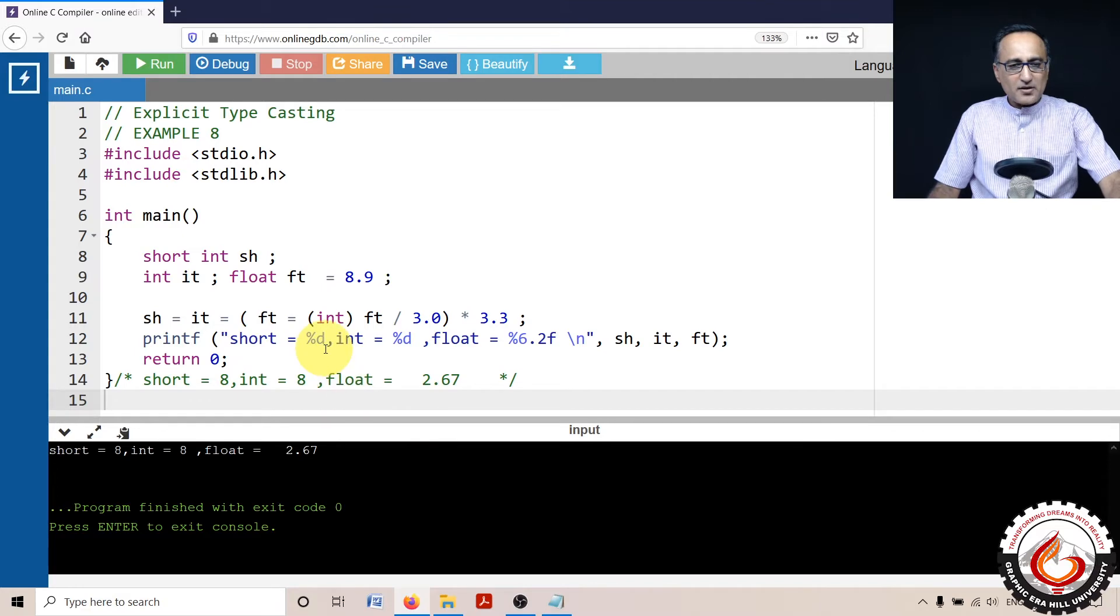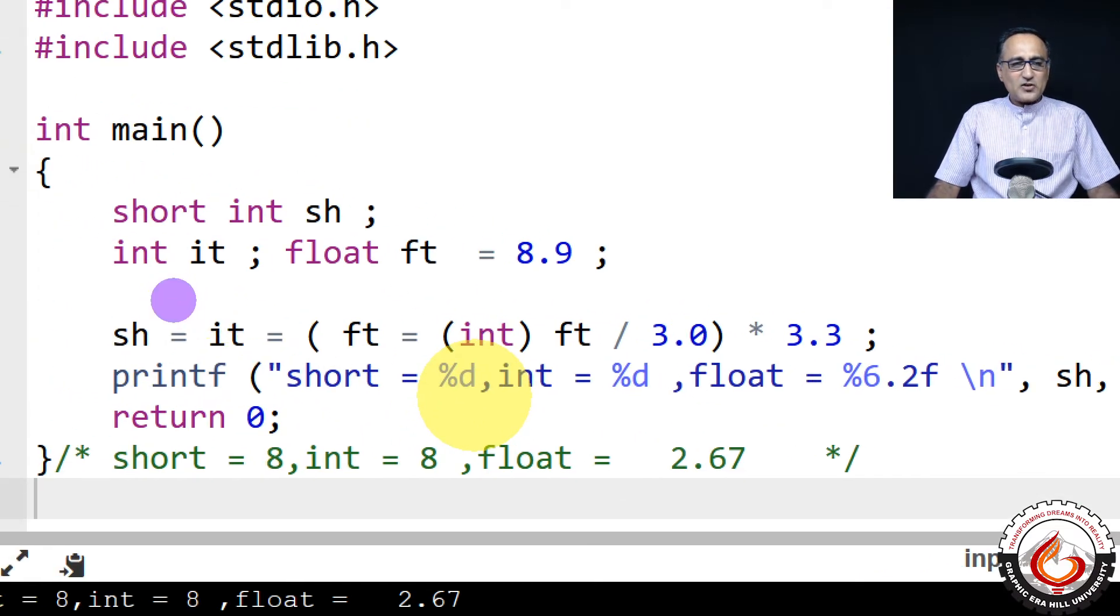So what I'm trying to do here is I have declared a short type variable sh, int it, and float ft as 8.9.